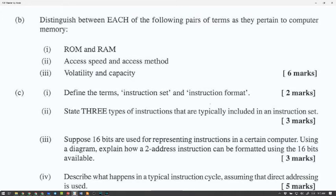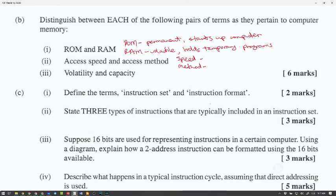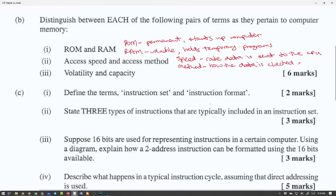Distinguish between each of the following pairs of terms as they pertain to computer memory. ROM and RAM. You could say ROM permanent and RAM volatile. You could also say starts up the computer for ROM. And for RAM, you could say holds temporary programs. Access speed now and access method. Speed will be like the rate data is sent to the CPU. And the method will be how the data is accessed. For this, you have to give an example. So, you have to say example sequential. Because there's no other way to really explain it. But if you give an example, it will show that you understand.